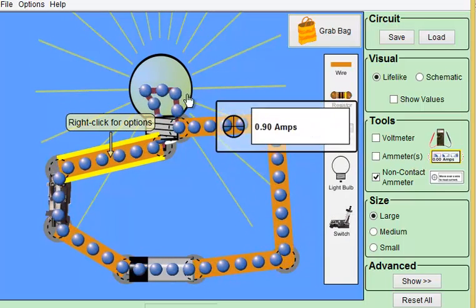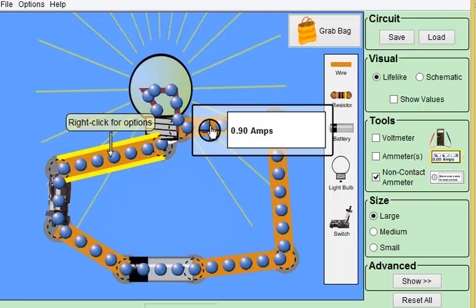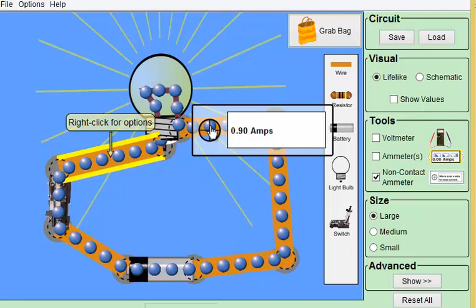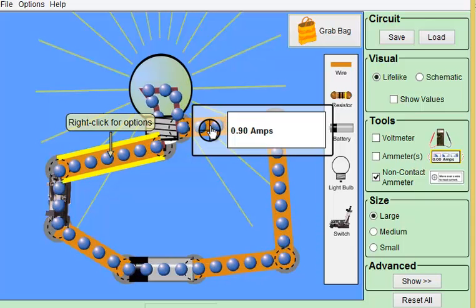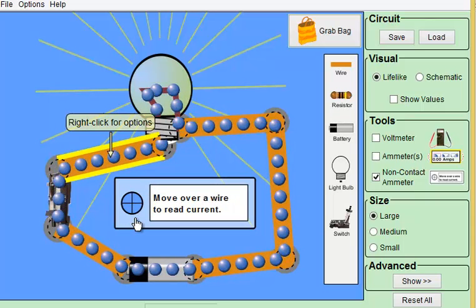Over here, 0.90. Everywhere I measure it. Inside the bulb, it doesn't matter. The point is that in a simple circuit like this, every point of the circuit has the same current. And we can see that these electrons are moving just as fast through every part of that circuit.